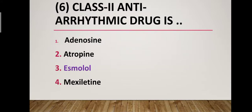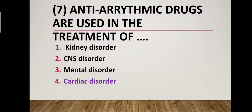Question number six: Which of the following is a Class 2 antiarrhythmic drug? Option one: adenosine. Option two: atropine. Option three: esmolol. Option four: mexiletine. Correct answer is option three — esmolol. Esmolol is a Class 2 antiarrhythmic drug.